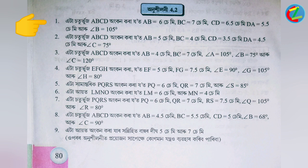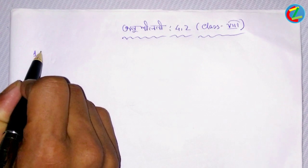AB is equal to six centimeter, BC is equal to seven centimeter, CD is equal to six point five centimeter, DA is equal to five point five centimeter. We will construct quadrilateral ABCD with these given measurements.